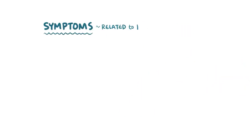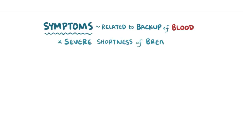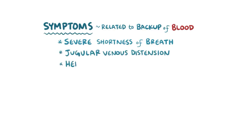Because cor pulmonale stems from pulmonary hypertension, the symptoms are all related to the backup of blood in the venous system. Pulmonary hypertension can lead to severe shortness of breath, and from blood being backed up in the body, it can cause jugular venous distension, hepatosplenomegaly, and edema.